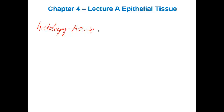For this chapter, it's important that you know the different types of tissues, where their locations are on the body, and what their major function is. So let's go over the four different types of tissues here.